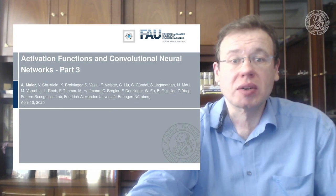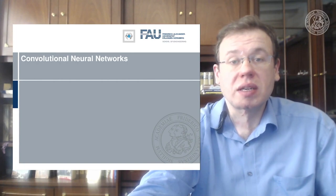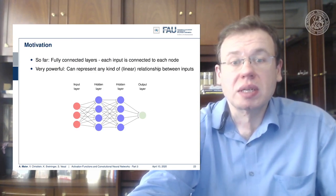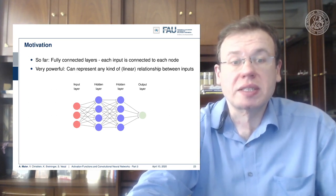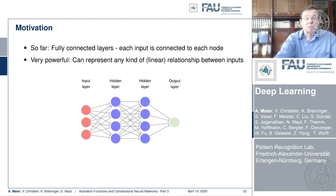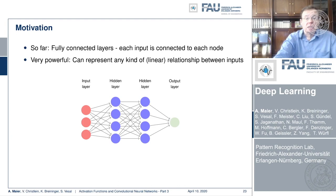Welcome back to deep learning. Today we want to continue talking about convolutional neural networks and one of the most important building blocks of deep networks. So far we had fully connected layers where each input is connected to each node. This is very powerful because it can represent any kind of linear relationship between the inputs — essentially between every layer we have one matrix multiplication — which means that from one layer to another we can have an entire change of representation, but this also means we have a lot of connections.